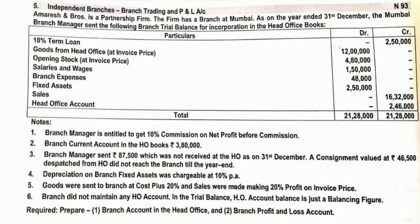Reading the trial balance items: 18% term loan is a liability of the branch. Goods received from head office at invoice price, Rs. 12 lakhs, goes into the branch trading account. Opening stock also goes into branch trading account. Salaries and wages, and branch expenses, will be in the profit and loss account. Fixed asset is an asset. Sales will be on the credit side of the branch trading account. Head office balance, credit balance of Rs. 2,46,000, is a liability of the branch.